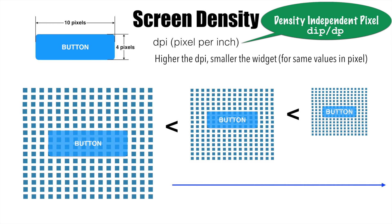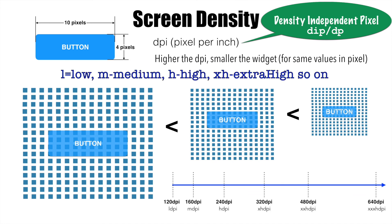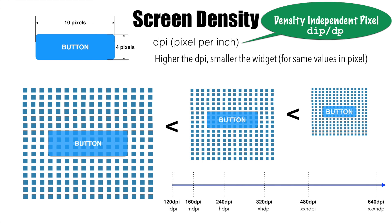Android categorizes screen densities into different categories, starting from LDPI up to XXXHDPI. LDPI is usually 120 dots per inch, MDPI is 160 dots per inch, and XXXHDPI is usually around 640 dots per inch. Android considers 160 DPI — medium dots per inch — as the baseline density. If you consider baseline density as X, then HDPI at 240 DPI comes to around 1.5X. That is straightforward math: 240 divided by 160. We can apply the same concept to define all other screen densities in terms of baseline. LDPI at 120 DPI would be 0.75 times the baseline.